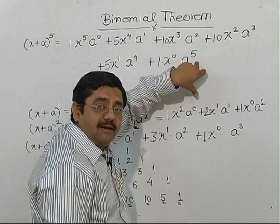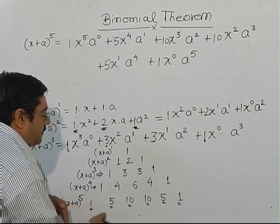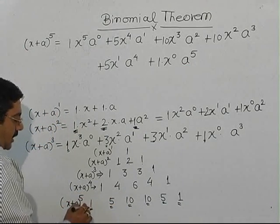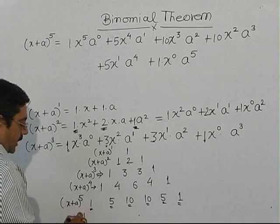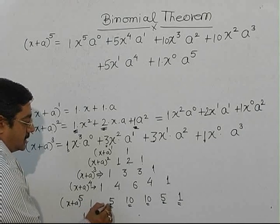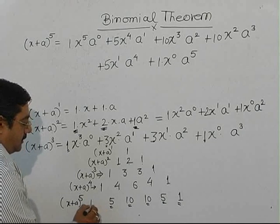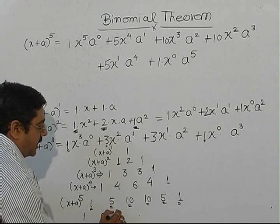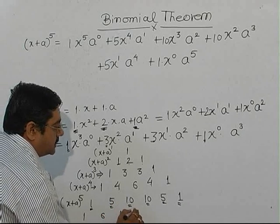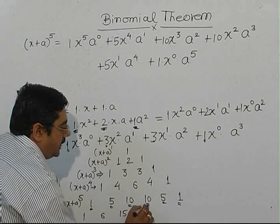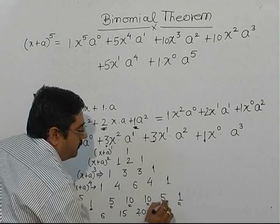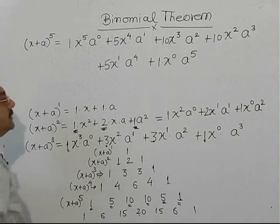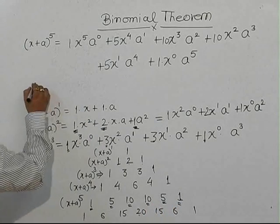If you want to expand one power further to (x + a)^6, take the previous row 1, 5, 10, 10, 5, 1 and build the next row: 1, then 5+1=6, then 10+5=15, then 10+10=20, then 10+5=15, then 5+1=6, then 1.